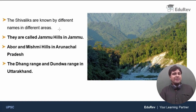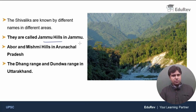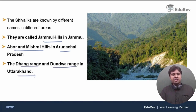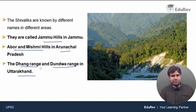This is a very important concept with many previous exam questions. The Shivaliks are known by different names in different areas. They are called Jammu Hills in Jammu, Abur and Mishmi Hills in Arunachal Pradesh — Mishmi Hills being occupied by thick forests — and they are called the Dhang Range and Dundwa Range in Uttarakhand. Please remember these names, as they are very important from an exam perspective.